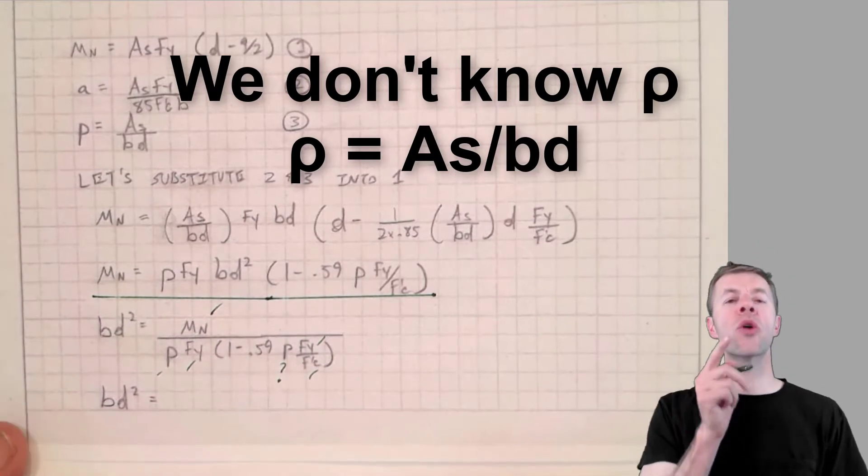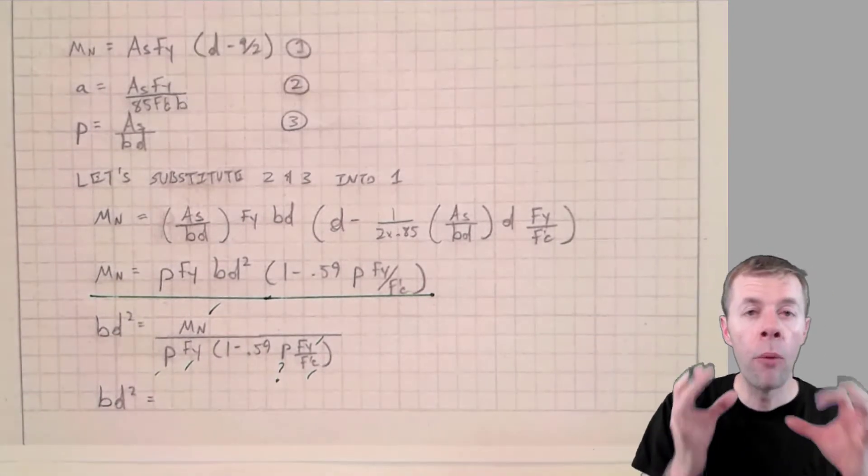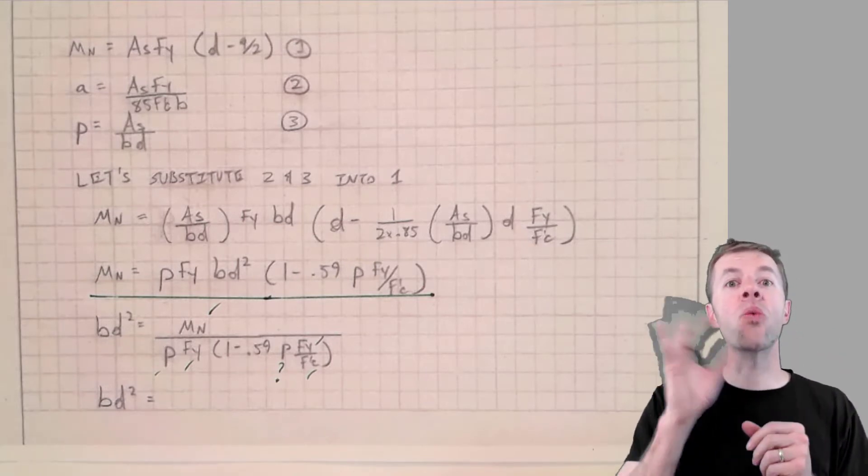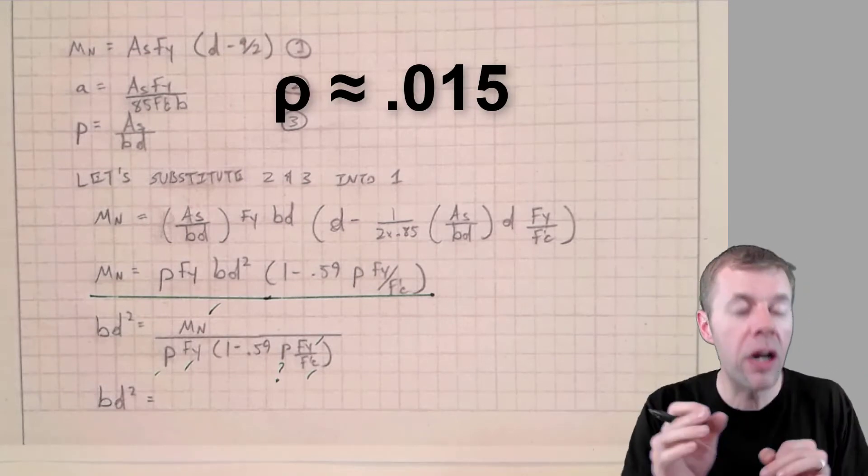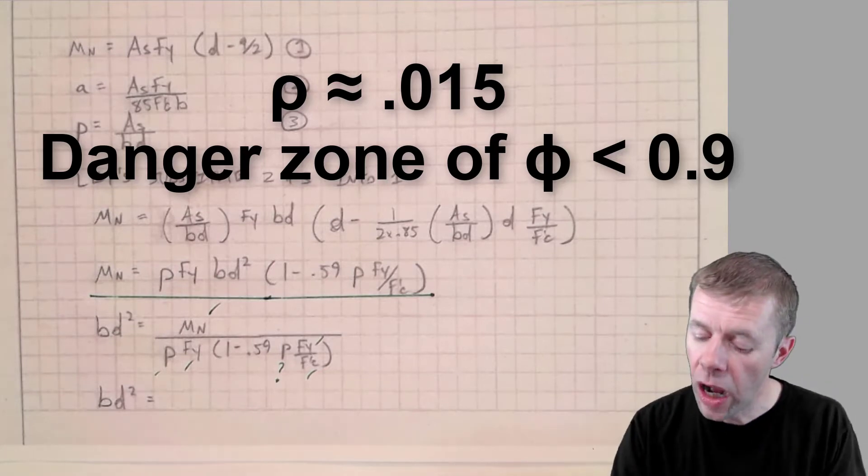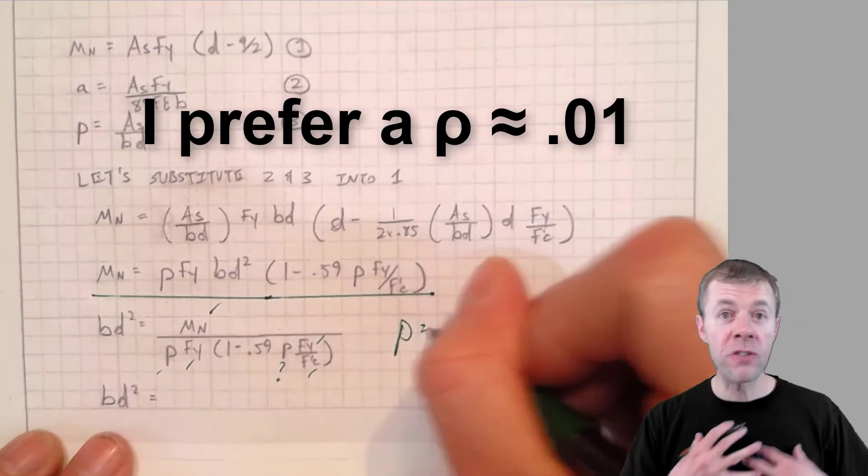So we want to pick a rho that's not too big and not too small. We want to pick a rho that's just right. If you get a rho near about 0.015, then you're in the danger zone of your phi no longer being 0.9. Therefore, I like a rho of 0.01. That's my preference.